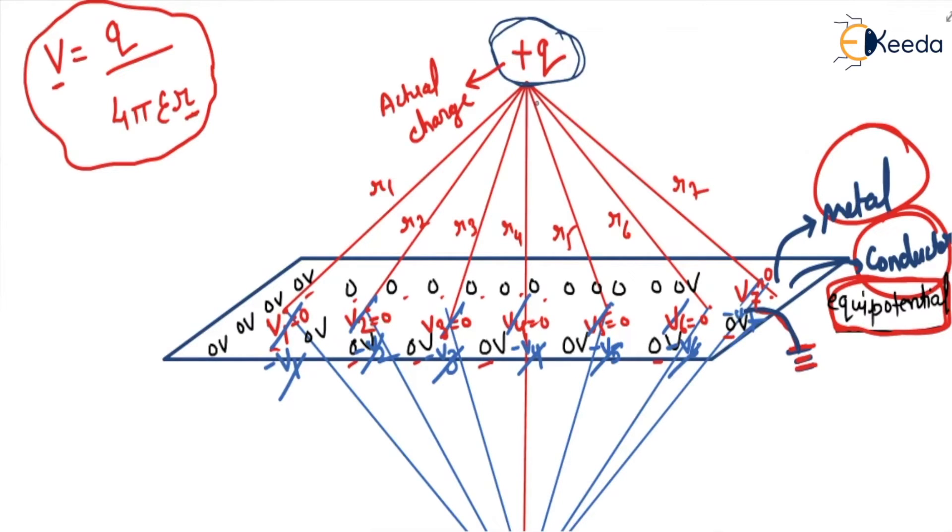We know the formula of absolute voltage. According to this formula, this plus q charge will impose different potentials on the conductor surface, but that all has to be zero.